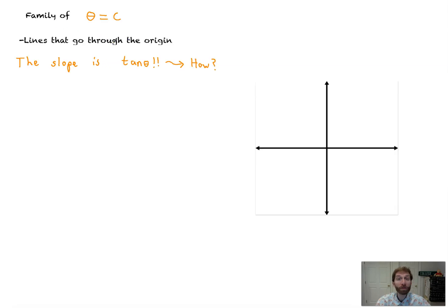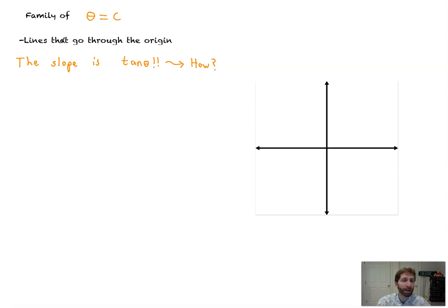Now we've got a new family of curves. We're going to go over three families in this video. The second one being theta equals a number. This one's not so bad — it basically means that the angle is always set at whatever that value is. So these are lines that go through the origin. The slope of any line going through the origin is always going to be tangent of theta, and I want to show you why.